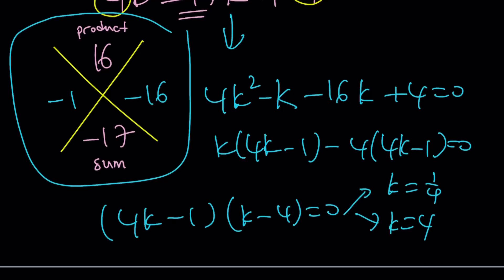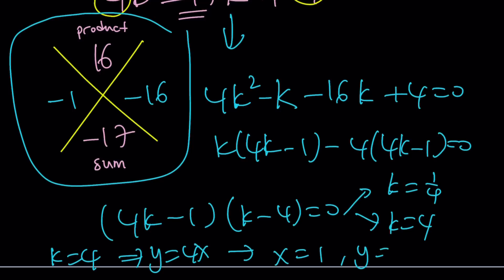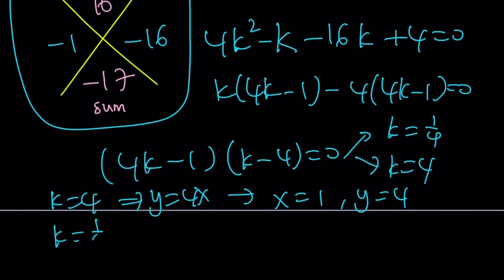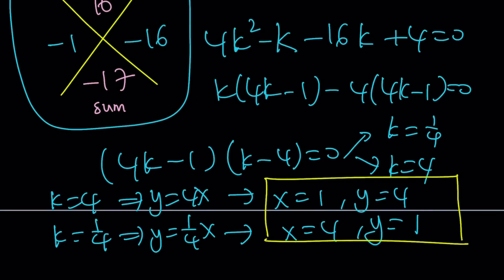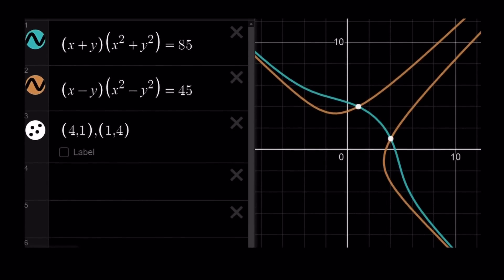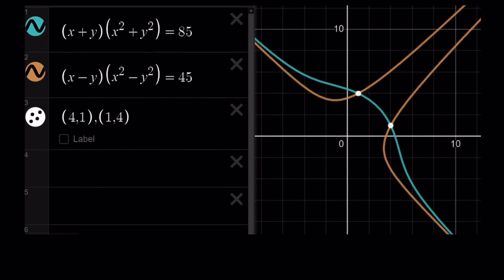If k equals 4, then y equals 4x; substituting gives x equals 1 and y equals 4. If k equals 1/4, then y equals x/4; substituting gives x equals 4 and y equals 1. So the two solution pairs are confirmed. Looking at the graph: the first curve looks like an elliptic curve, and the second resembles a hyperbola or boomerang shape. Thank you for watching — please comment, like, and subscribe. See you next time. Be safe and take care!